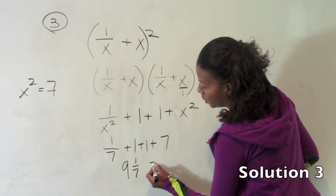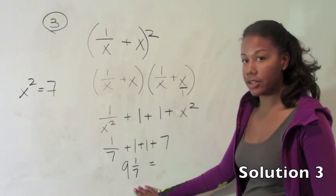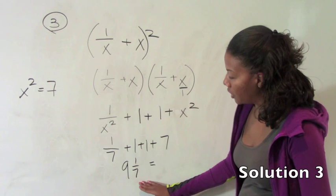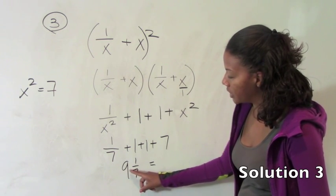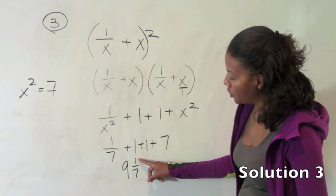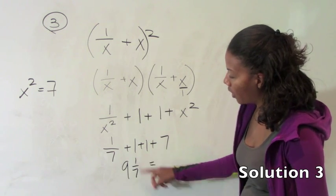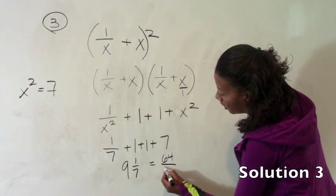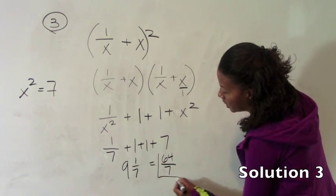You are instructed to write your answer as a fraction. So in order to convert this mixed number into a fraction, you take your integer times your denominator, which is 63. You add your numerator, which is 64. So your new numerator is 64 over the 7. So the answer is 64 over 7.